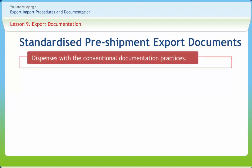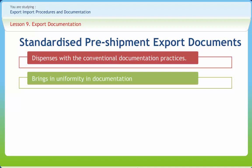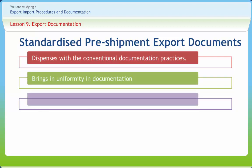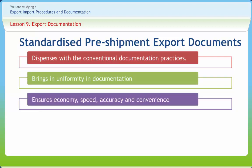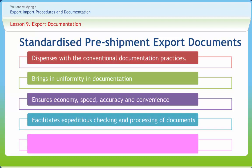All the aligned documents can be run off from the same master document with the help of suitable marking reproduction techniques. The ADDS system dispenses with conventional documentation practices, brings in uniformity in documentation, ensures economy, speed, accuracy and convenience, and facilitates expeditious checking and processing of documents at different stages. It generates as many copies as required of commercial and regulatory documents from their respective master copies through photocopying machines.